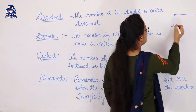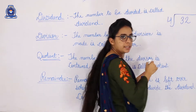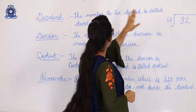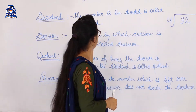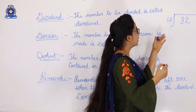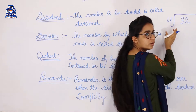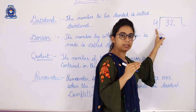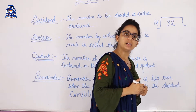Here: 32 divided by 4. So 32 is the dividend — the number to be divided — and 4 is the divisor — the number by which division is made. Let's start our division. We recite the table of 4: 4 ones are 4, 4 twos are 8, 4 threes are 12, 4 fours are 16, 4 fives are 20, 4 sixes are 24, 4 sevens are 28, 4 eights are 32.